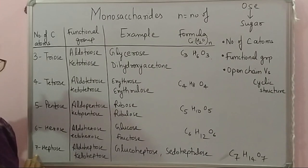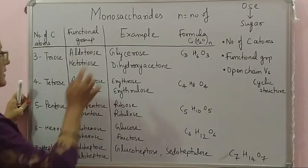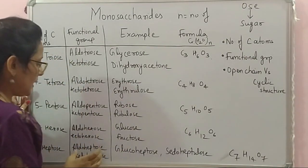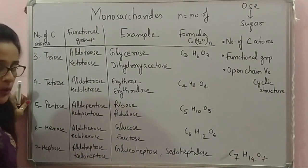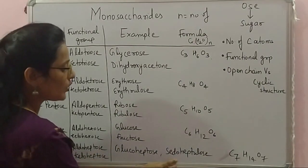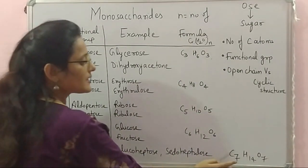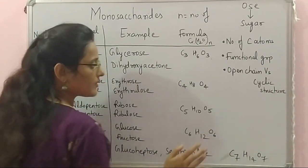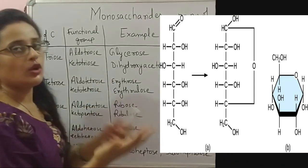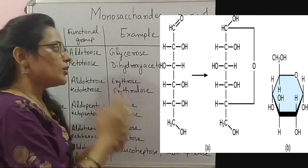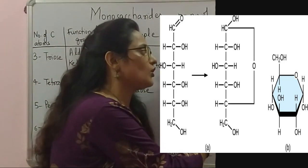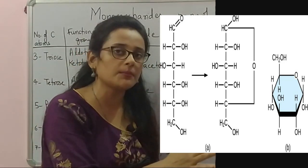If the number of carbon atoms is seven in a monosaccharide, it is called a heptose, which is of two types: aldoheptose and ketoheptose. The example of aldoheptose is glucoheptose and of ketoheptose is pseudoheptulose. The formula is C7H14O7. A monosaccharide or carbohydrate can be present in an open chain form or a cyclic structure, but cyclic structures are more stable. We will see the difference and how to draw them in upcoming videos.